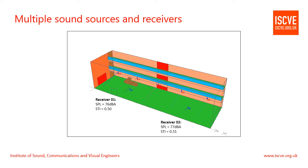But hold on — what about the balcony areas? We now have balcony loudspeakers, including under the ground floor balcony. As expected, the SPL has gone up due to having more loudspeakers. But as you can see, the STI at receiver 0.1 and 0.2 now fail the sound system for emergency purposes target of 0.5. So what's happened?